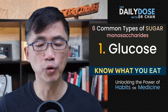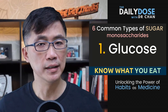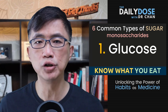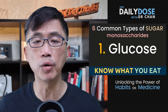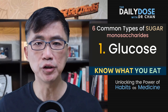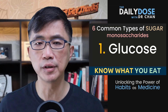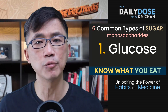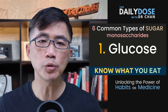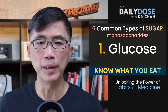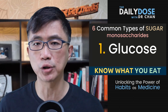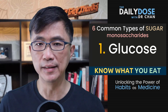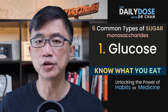Glucose is a monosaccharide, a simple sugar. It is a major energy source for our body. It is naturally found in fruits, vegetables, and the nectar of plants. We also get glucose from other carbohydrate-containing foods when we eat and digest starchy foods.